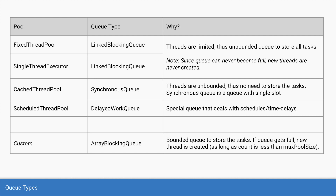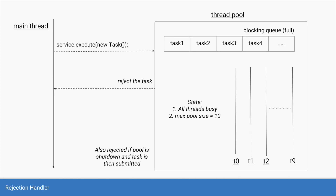You can also have a custom type of thread pool where instead of a linked blocking queue, which is unbounded, you can have a bounded queue to store the tasks. So let's say we have a thread pool where all 10 threads are already busy with 10 tasks, and we have an array blocking queue that is already full with 100 tasks — so there are 110 total tasks in the thread pool. When the next task is submitted, the thread pool has no area to store it and no new threads to create, so it has to reject the task.